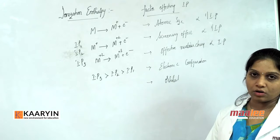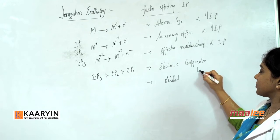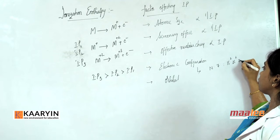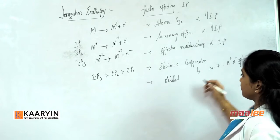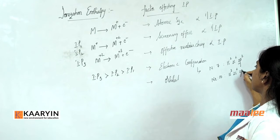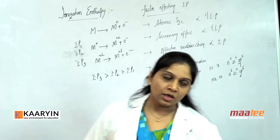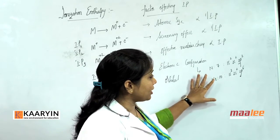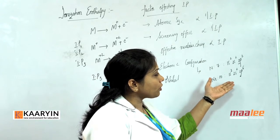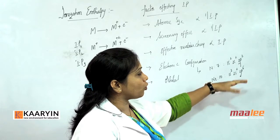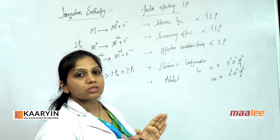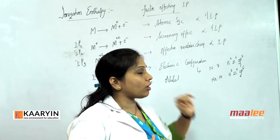The next factor is electronic configuration. For example, nitrogen (atomic number 7) has configuration 1s², 2s², 2p³ — the p orbitals are half-filled. Neon (atomic number 10) has configuration 1s², 2s², 2p⁶ — the orbitals are completely filled. Atoms with half-filled or completely filled configurations are highly stable. To remove an electron from such atoms is very difficult. So for these elements the IP values are very high when orbitals have half-filled or completely filled configuration.